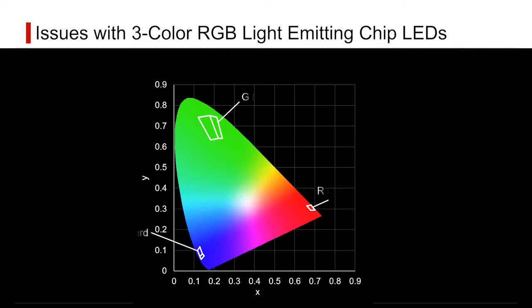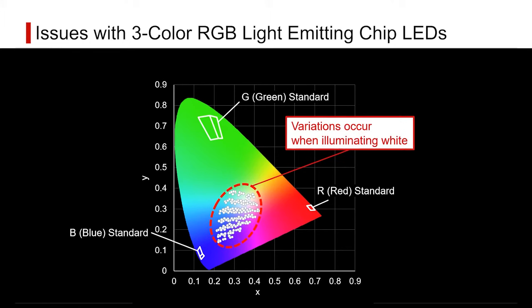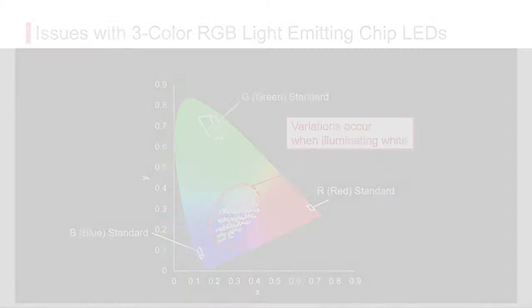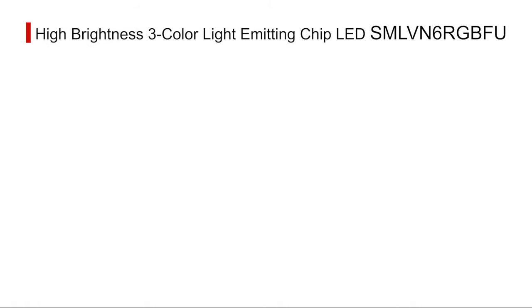However, although RGB LEDs can express any color, the wide range of specifications for each color inevitably results in variations in color and brightness when elements are combined, for example when expressing white. Rome has developed an RGB chip LED that precisely controls the luminous characteristics of each element while improving color mixing using in-house device technology.